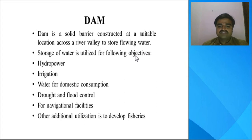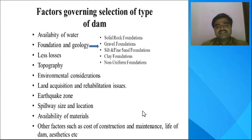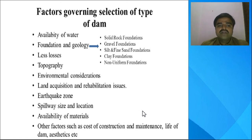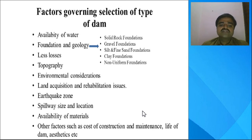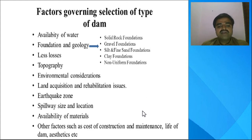Next, we will go through the different factors which govern the selection of the type of dam. There are many such factors: availability of water, type of foundation required for dam construction, topography, environmental conditions, land acquisition, earthquake considerations, spillway size and location, availability of materials, cost of construction, and maintenance.